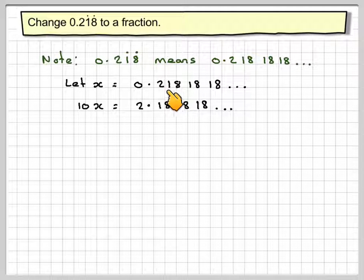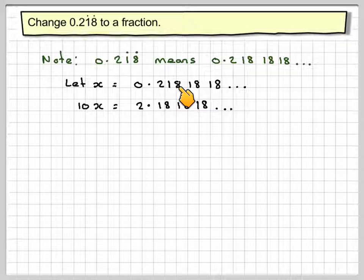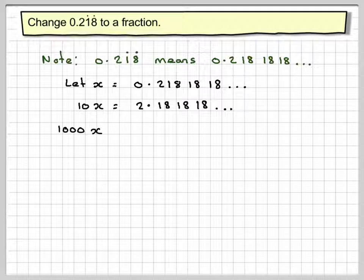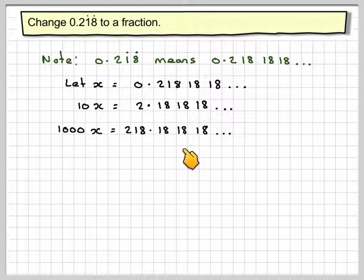Then, because it recurs after the third digit, you multiply the original by 1000. You get 1000x, which gives you 218.181818...